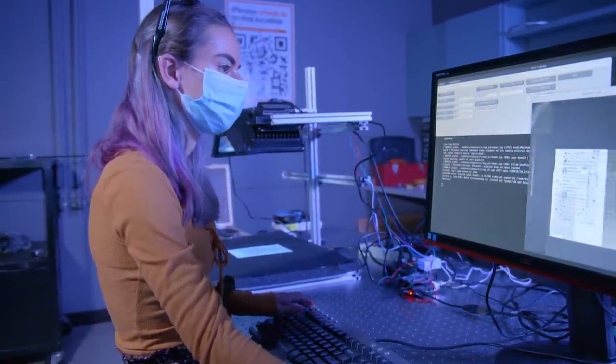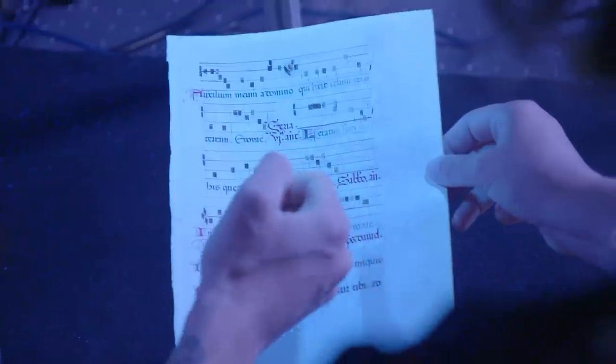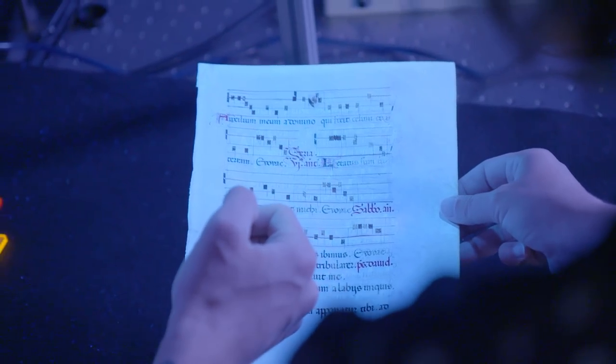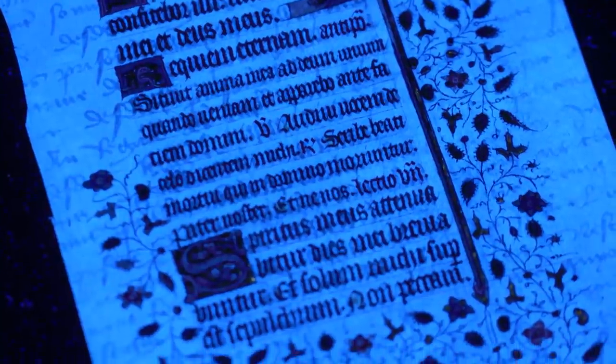Using our system, we borrowed several parchments from the Cary collection here at RIT. When we put one of them under the UV light, it showed this amazing dark French cursive underneath.